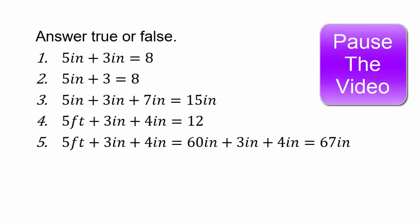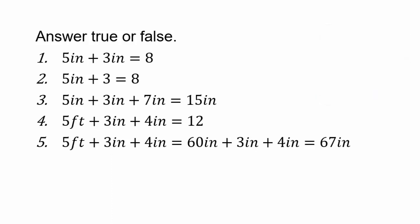Let's see if you can answer these true or false. Pause the video and see if you can understand whether '5 inch + 3 inch = 8' is true or false, and so on. Five inches plus three inches is eight inches — if you don't include the unit, you won't have a true statement. Number four is false because they're not like units. But number five, converting five feet to 60 inches, allows us to add and write 67 inches.